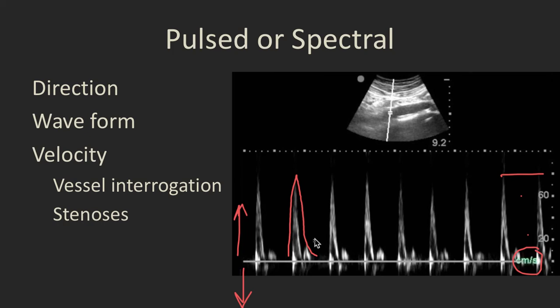So what do we use this for? We use this for interrogating vessels to see if they're arteries or veins and whether there's a presence of a stenosis or other flow abnormality within that vessel.